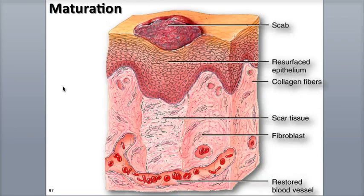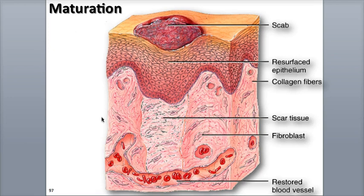In the proliferative phase, lots of growth occurs. Epithelial cells under the scab begin to grow more rapidly, more collagen is secreted by the fibroblasts, and more blood vessels continue to grow.